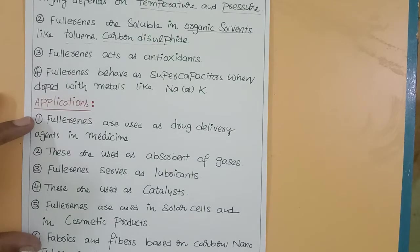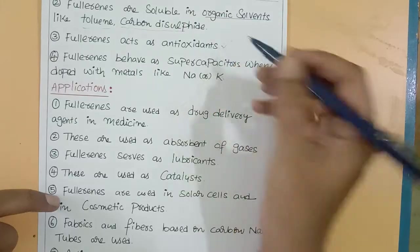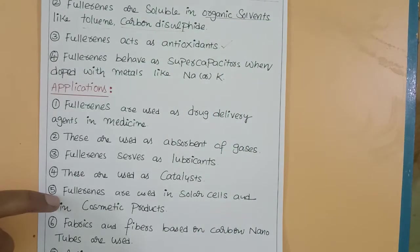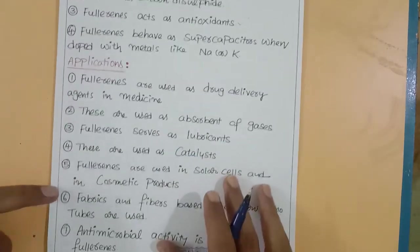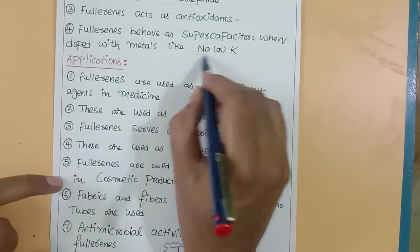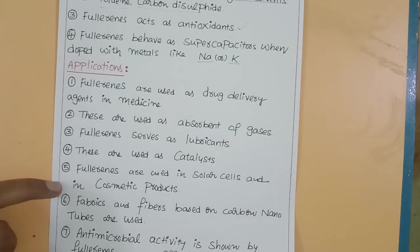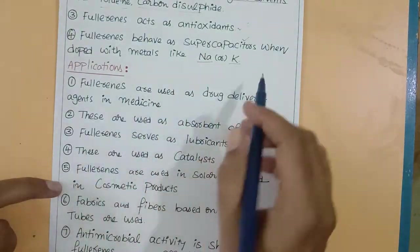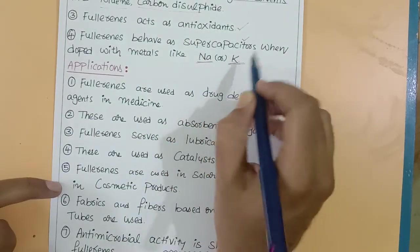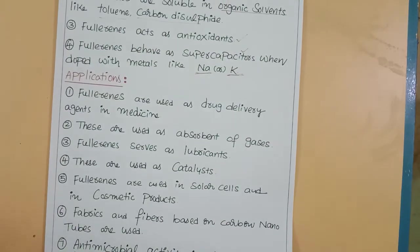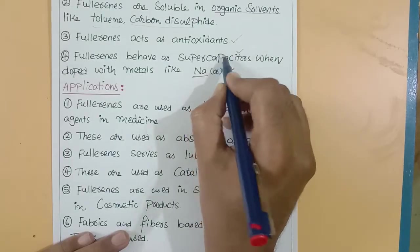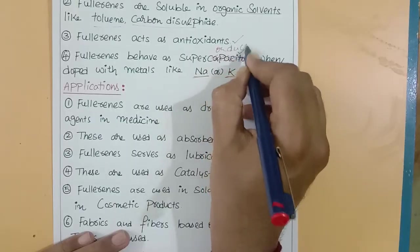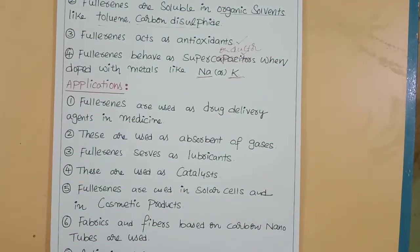Fullerenes act as antioxidants. Fullerenes easily accept electrons and behave as electrophiles, so they can oxidize various substances. Therefore fullerenes are good antioxidant compounds. Fullerenes behave as supercapacitors when doped with metals like sodium or potassium. Supercapacitors store 100% electricity without resistance.